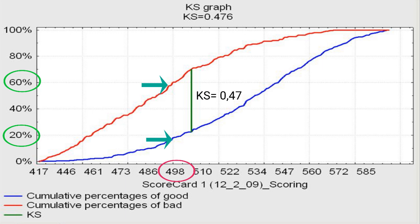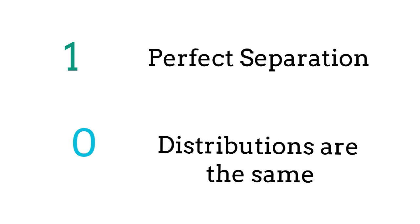So for example, in this case, the KS statistic value is 0.47. A value of 1 indicates that the distributions are perfectly separated, while a value of 0 indicates that the distributions are the same.